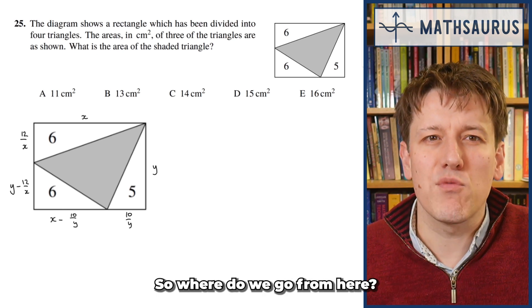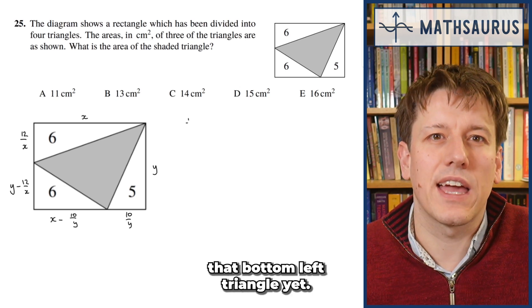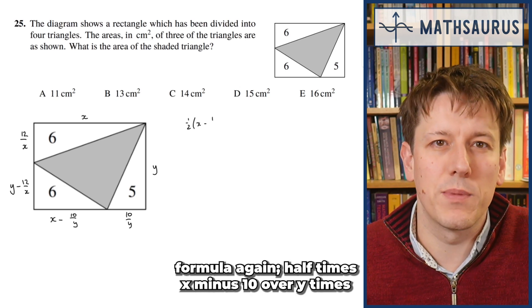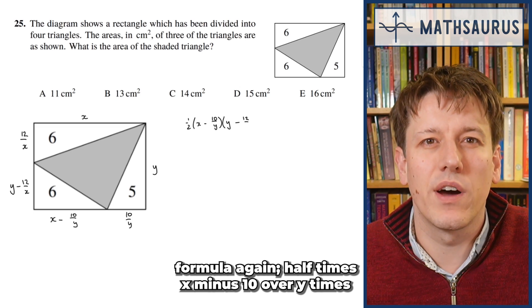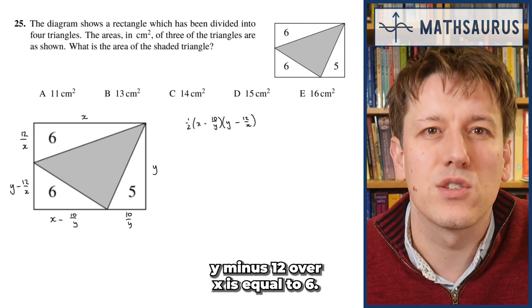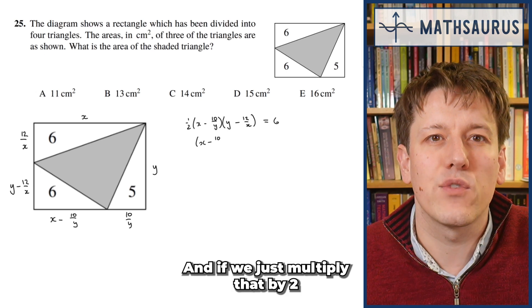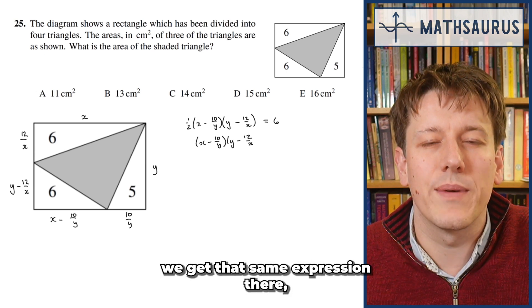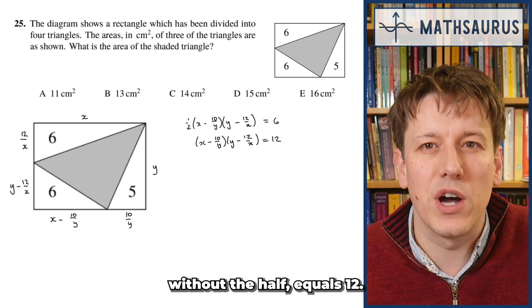So where do we go from here? We haven't actually used the bottom-left triangle yet, so let's use the area of a triangle formula again. A half times (X minus 10 over Y) times (Y minus 12 over X) equals 6, and if we just multiply that by 2, we get that same expression without the half equals 12.